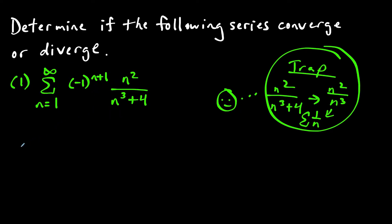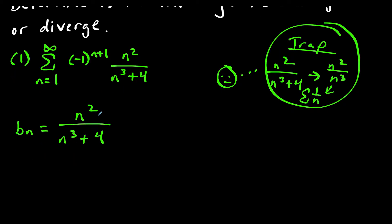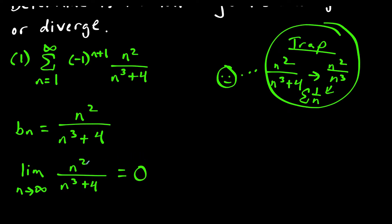For the alternating series test, we define b sub n — the piece next to negative one to the n plus one — so b sub n is n squared over n to the third plus four. We have to show that the limit as n goes to infinity of b sub n equals zero. We have a rational function with the denominator having a higher power than the numerator, so the limit goes to zero. If the degree of the denominator is greater than the degree of the numerator, the limit equals zero. That's one condition met.